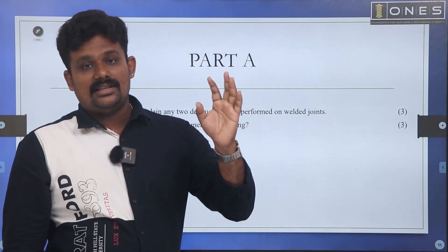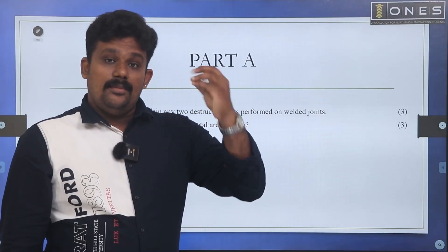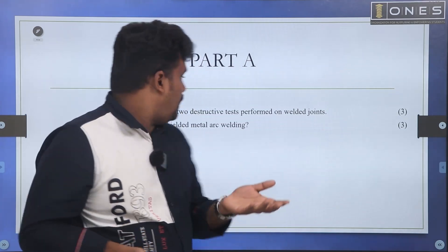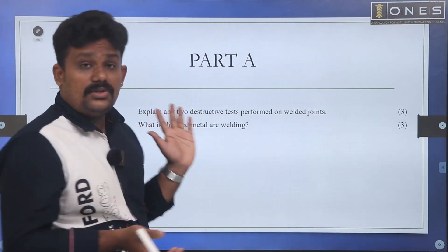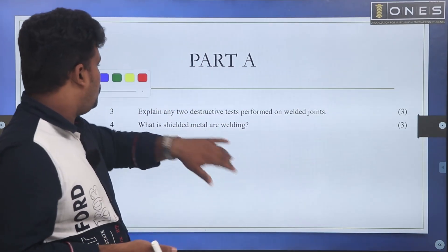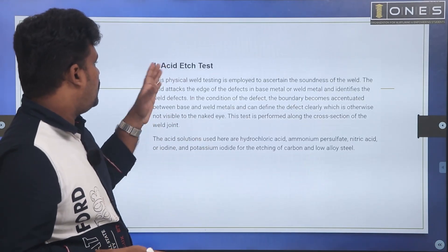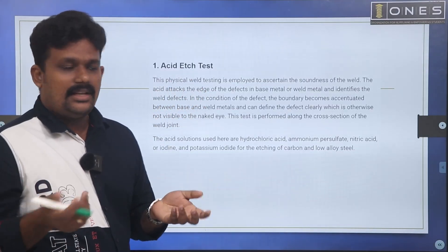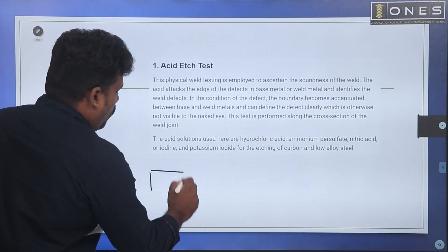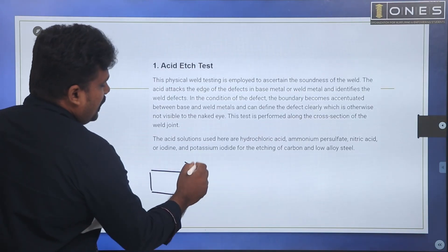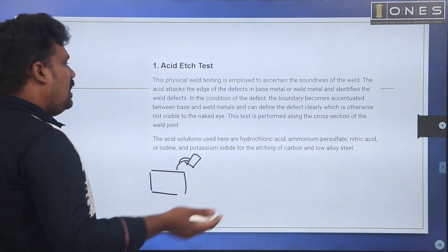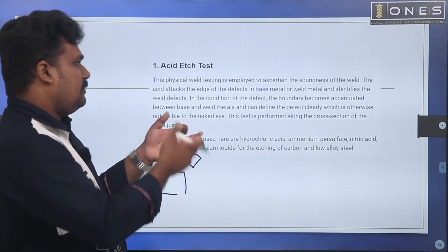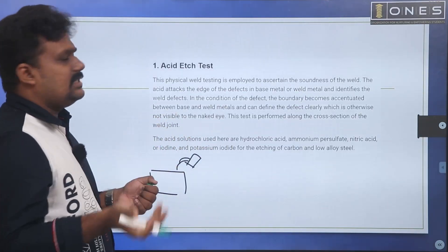Destructive test types include: impact test, tensile bend test, bending test, and acid test. The workpiece is prepared and there are many steps involved in acid testing.